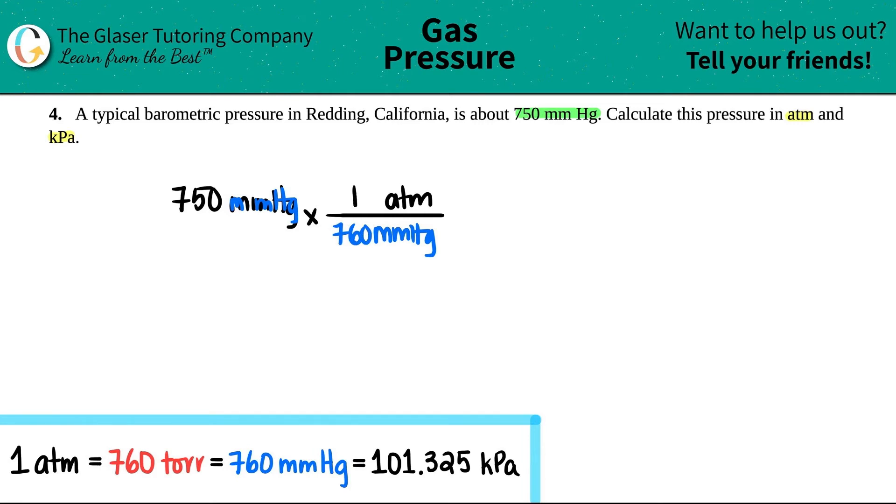Cancel out millimeters of mercury, and now all we have to do is 750 divided by 760. Let's figure it out: 750 divided by 760, and for sig fig purposes we'll do two sig figs, so it would be 0.99 atm. Okay, that's the answer to the first one.